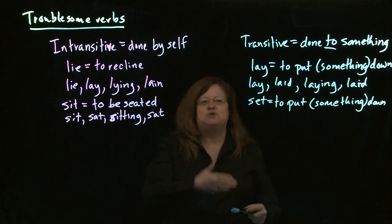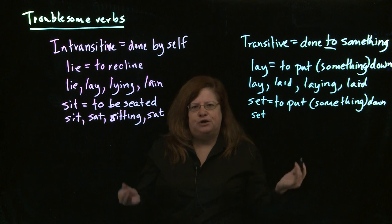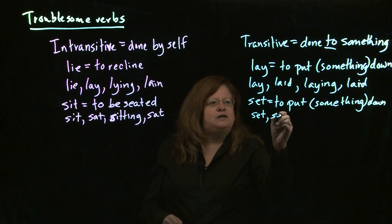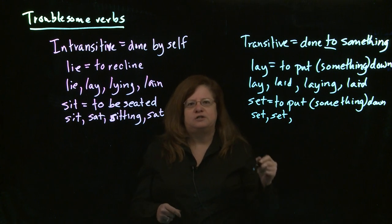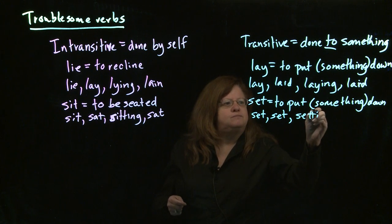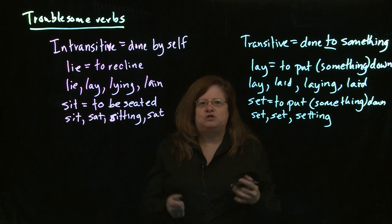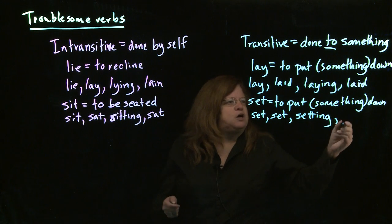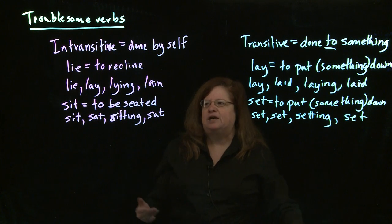For the transitive set — doing it to something: the present tense is 'set' — every day I set my books on the desk. The past tense is also 'set' — yesterday I set my books on the desk. The present participle is 'setting' — I am in the habit of setting my books in the same place so I always know where to find them. And the past participle is also 'set' — I have set my books in the same place for decades.